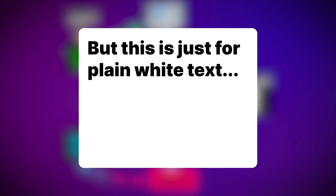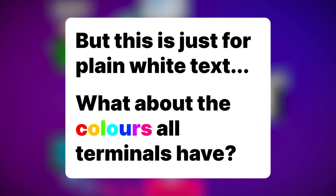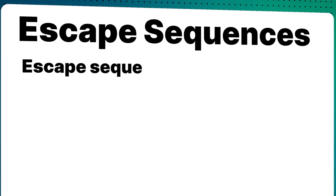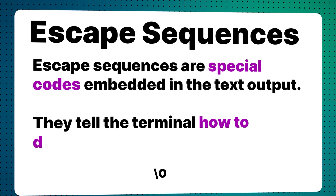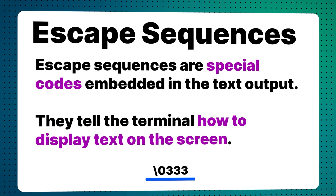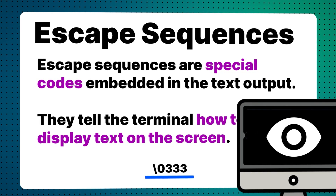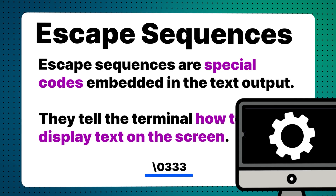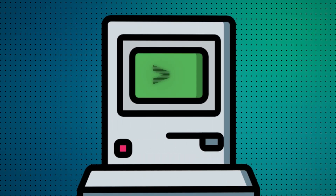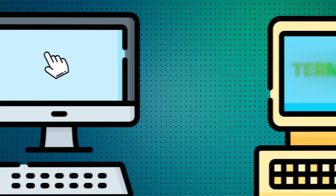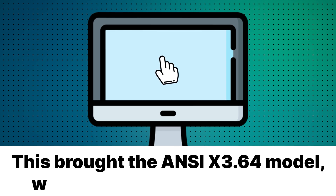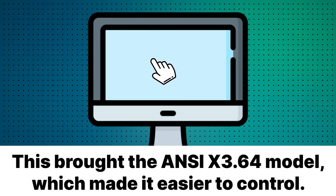But this is just for plain white text. How about the colors that all terminals have? Escape sequences. Escape sequences are special codes embedded in the text output that instruct the terminal how to display text. The terminal will see these codes and then decide how to render the text accordingly. Early terminals were really simple, but as they advanced, more features like colors, cursors, and more were added, which brought the ANSI x3.64 standard for basic control. This made it easier for developers to work with the terminal.